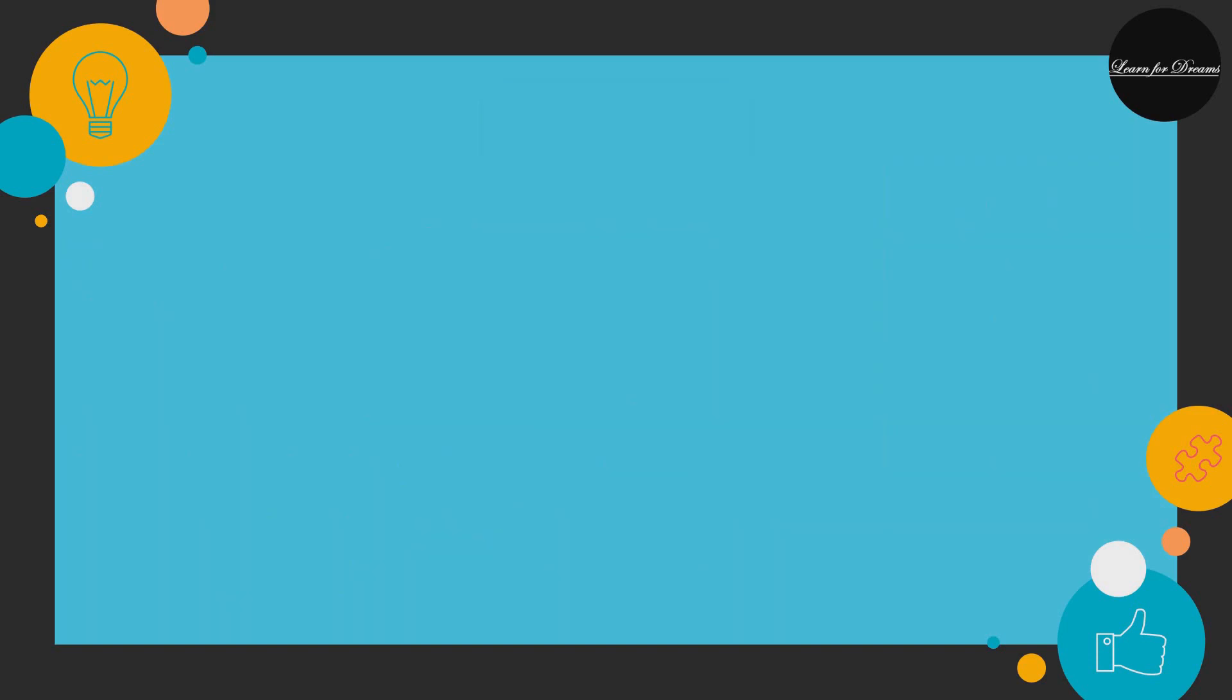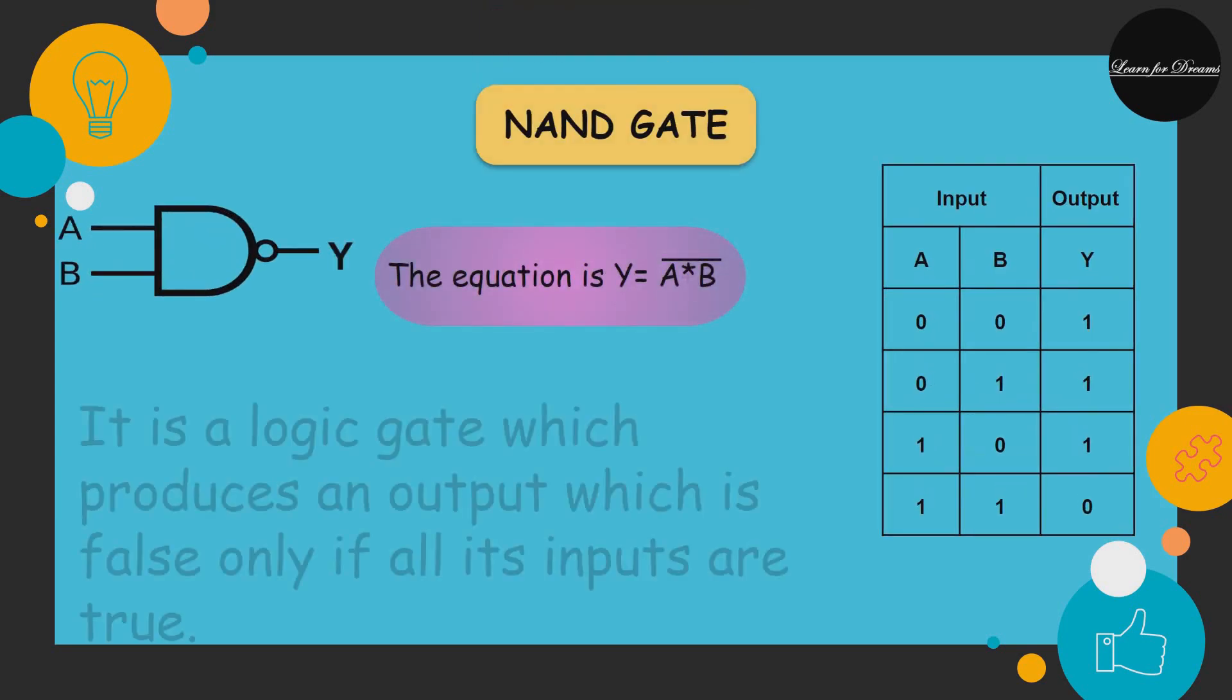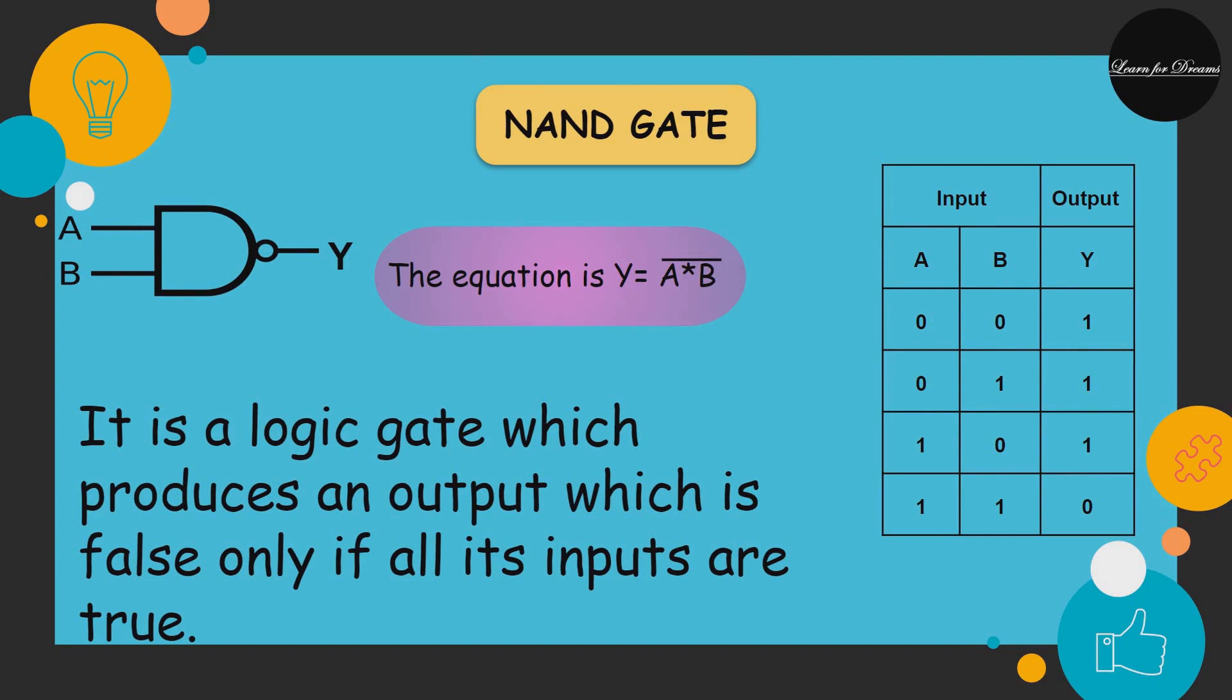Now a NAND gate, or NOT AND gate, is a logic gate which produces an output which is false only if all its inputs are true. Thus its output is complement to that of an AND gate. A low output results only if all the inputs to the gate are high. If any input is low, then a high output results.